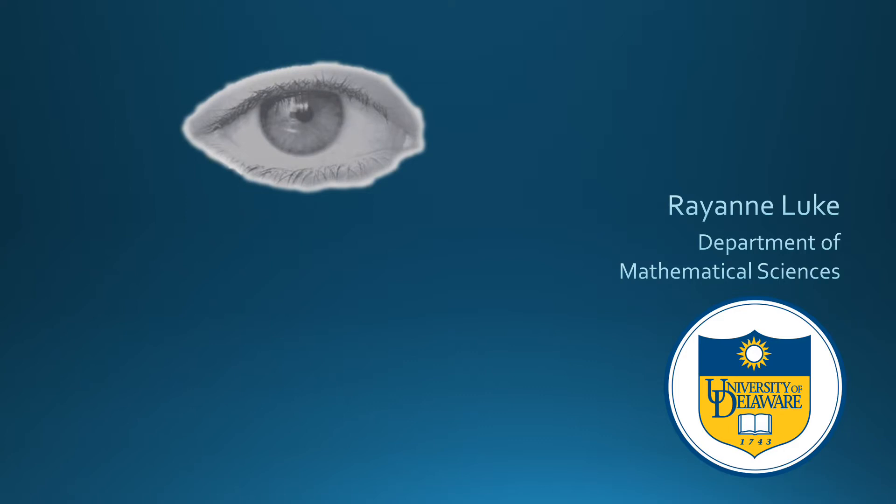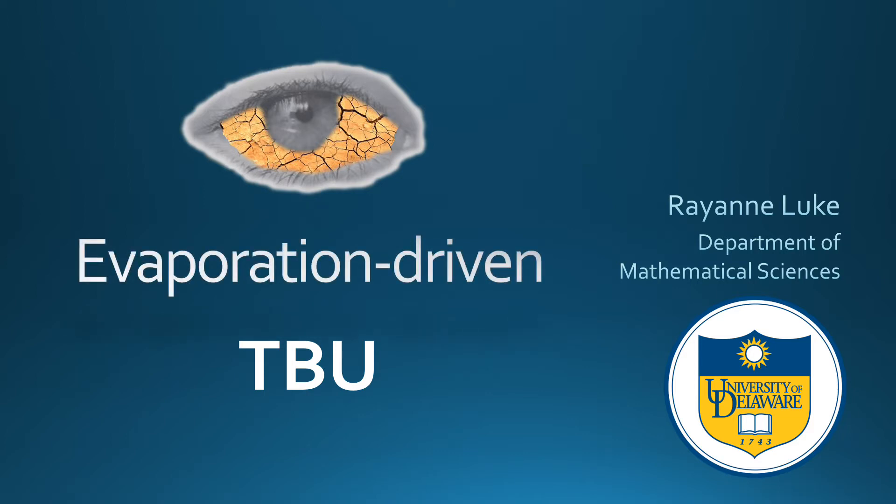A main cause of dry eye syndrome is tear film breakup, or TBU for short, which is the formation of dry spots on the eye. This means that the layer of tears covering the eye is thinning in certain regions. Evaporation is a key driving factor of TBU.